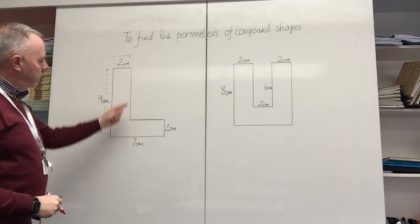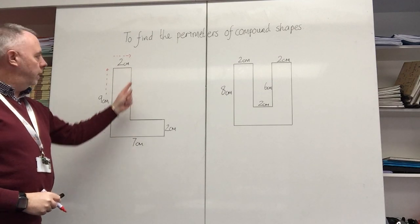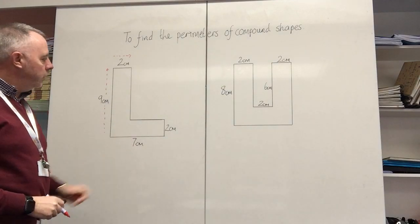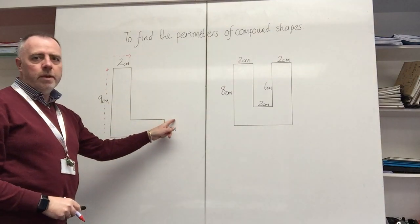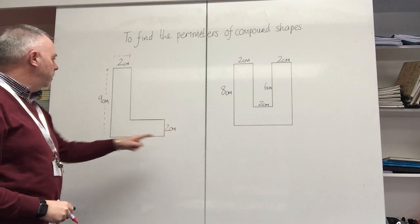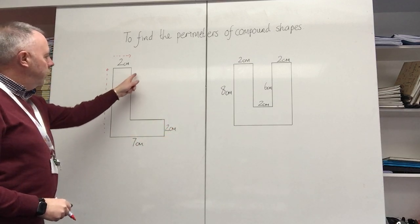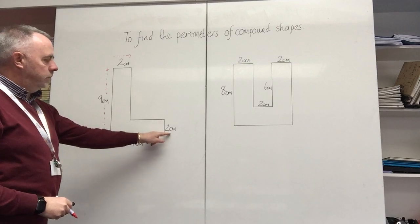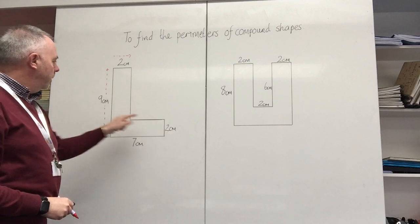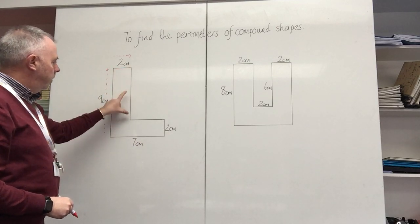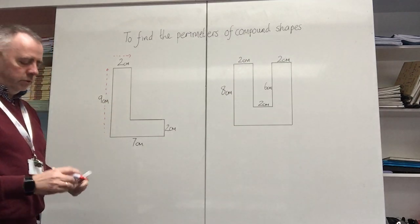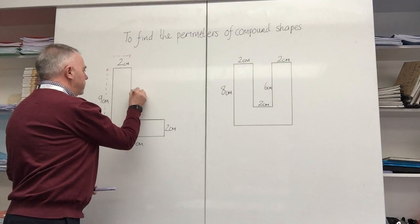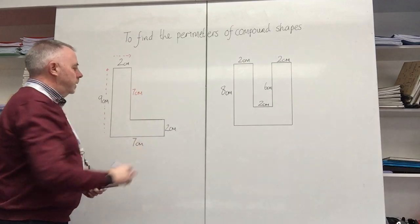I can see that I don't have a value for this next vertical side going down, but I do have a value over here of two centimeters. So to find this measurement I look at the nine here, and I know this is already two centimeters and that would occupy this length here. So nine subtract two gives me a distance of seven centimeters.